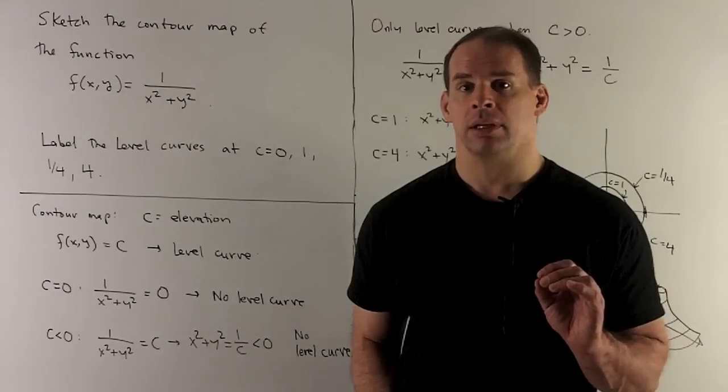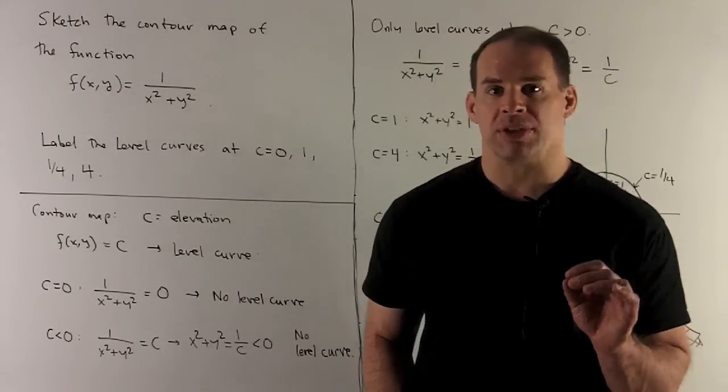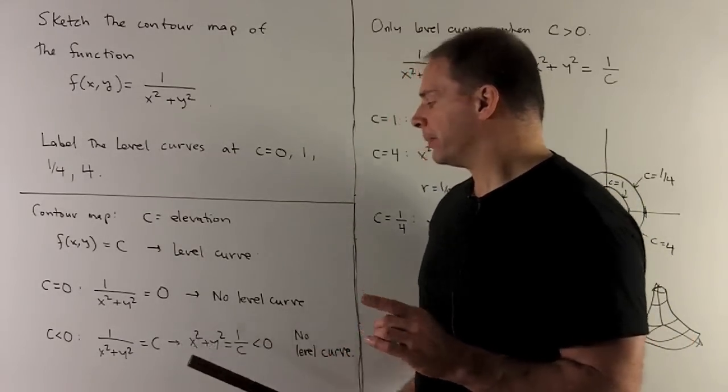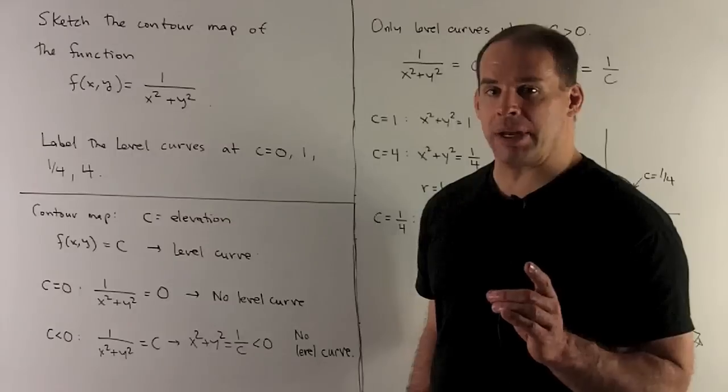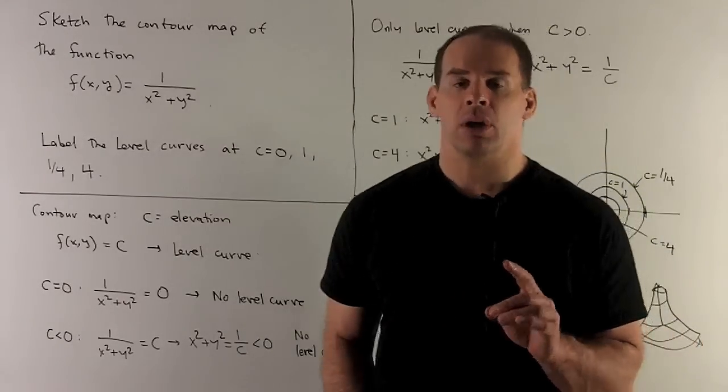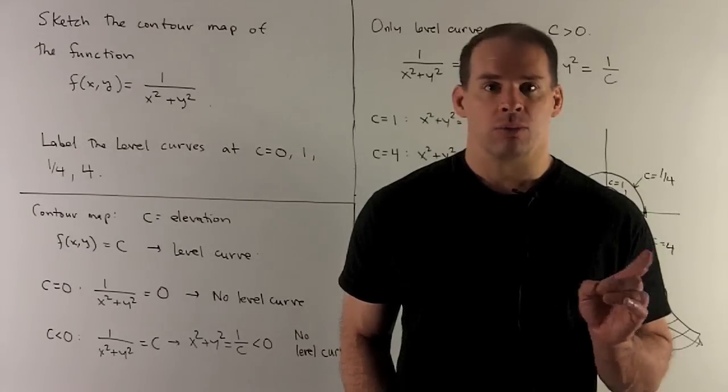Now let's get rid of the negative numbers. What happens if I try c negative? I have 1/(x² + y²) = c. We can clear the denominator. That gives me x² + y² = 1/c, which is still a negative number.